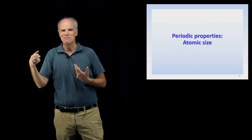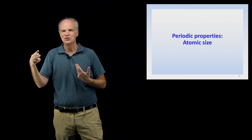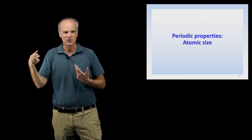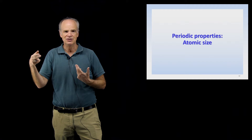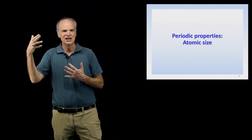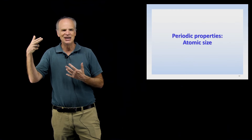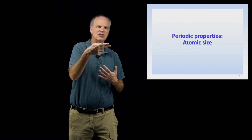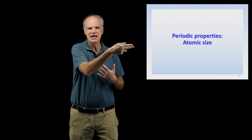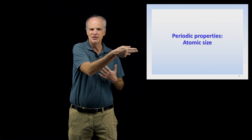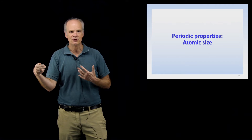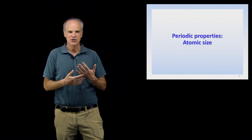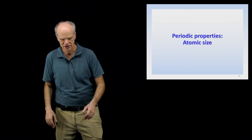But then when you go back to the beginning of the periodic table and you're in the third period, atomic number 11, this property becomes large again. As you go across the third period, it gets smaller and smaller until you get to the end where it's the smallest. Then when you go to period 4, the fourth row, it gets large again. So this would be a repeating property.